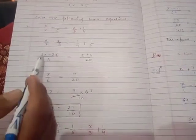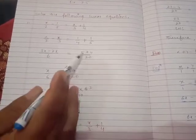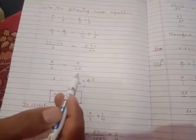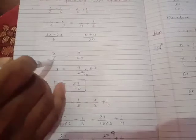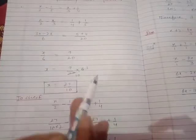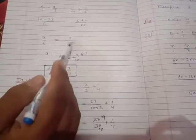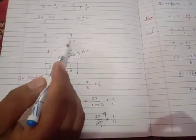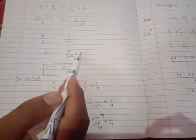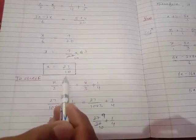Now 3x - 2x = 1x, so x/6. 5 + 4 = 9/20. Then this 6 will go to the right side in multiplication. Now we will divide by 2: 2 into 10 is 20, 2 into 6 is 3, so x = 27/10.